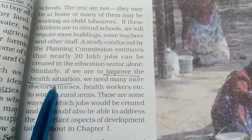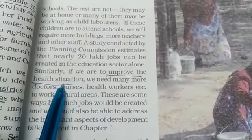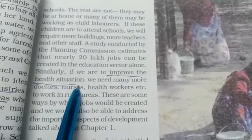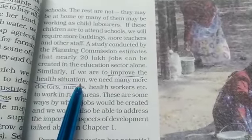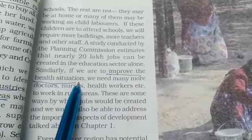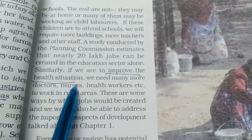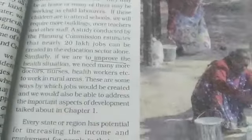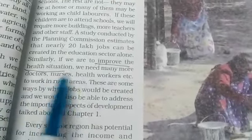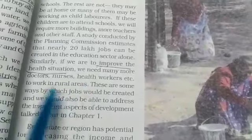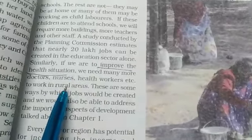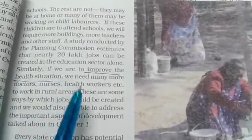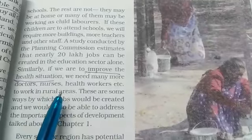Another thing is the government should start improving health services and education services — compulsory education should be there. The more you improve on these services, the more you are generating employment opportunities for people. For health services, there will be demand for doctors, nurses, and other health workers. For education, there will be demand for teachers and non-teaching staff.